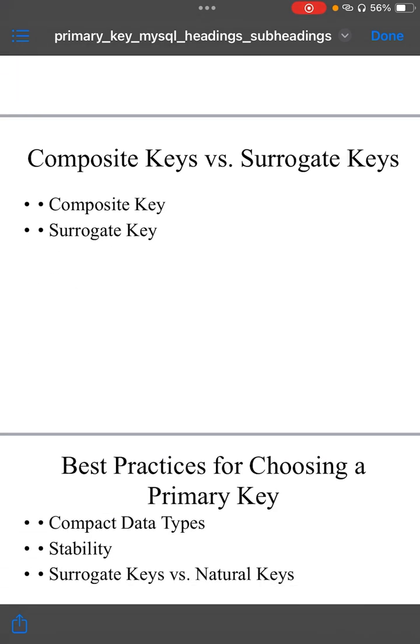Now let's understand composite key versus surrogate keys. Composite key: a composite key uses two or more columns to form primary key. This is useful when combination of columns can uniquely identify a row. Surrogate key is an artificially created identifier for each row, such as auto-incrementing integer. This is often more efficient than using composite key, especially when multiple columns are required to uniquely identify a row.